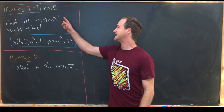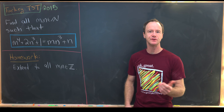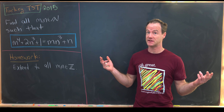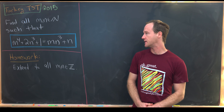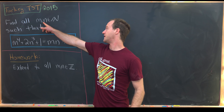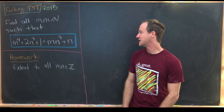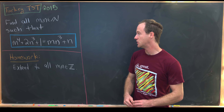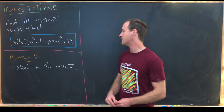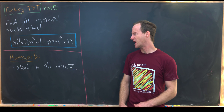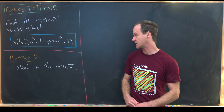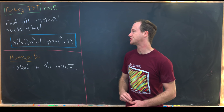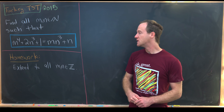Here we have a problem from the team selection test from Turkey for 2015. Many countries have these team selection tests to help select teams for international contests. Our goal is to find all natural numbers m and n satisfying the polynomial equation m to the fourth plus 2n cubed plus 1 equals mn cubed plus n. It might be a nice homework exercise to extend the solutions to all m and n in the integers, but here we're solving over natural numbers.